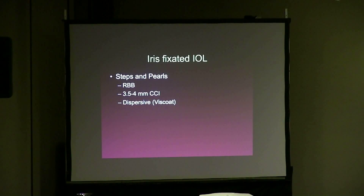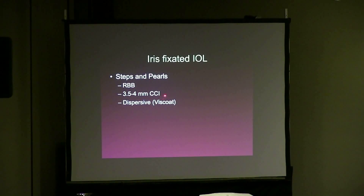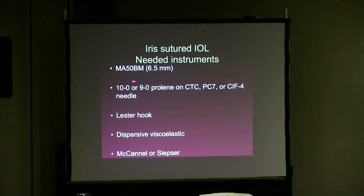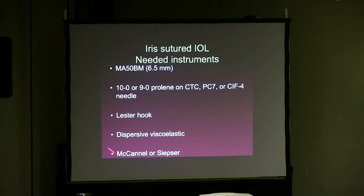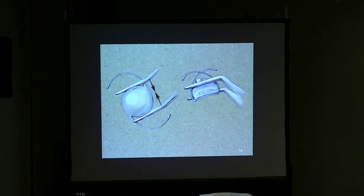I do not dilate these patients — I only give them a retrobulbar block, which actually dilates the pupil just a little bit. I do 3.5 millimeter clear corneal incisions. My favorite lens for this is the MA50BM — it's a 6.5 millimeter optic and it is non-aspheric, so even if it de-centers a little bit, it doesn't matter, as there is no aspherical aberration. I use a 10-0 or 9-0 Prolene suture and a modified McCannel suture technique.